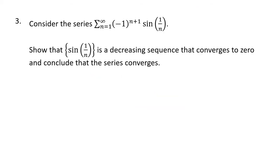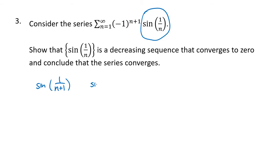One more of these. It looks a little different because we have a sine function, but the task is the same. We need to show that the numbers sine of 1 over n form a decreasing sequence that converges to zero. For decreasing, we compare sine of 1 over n plus 1 to sine of 1 over n.